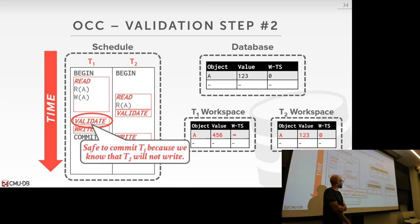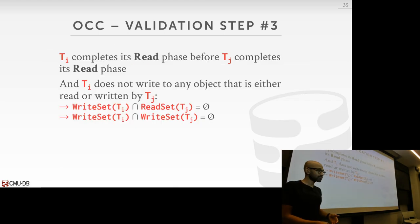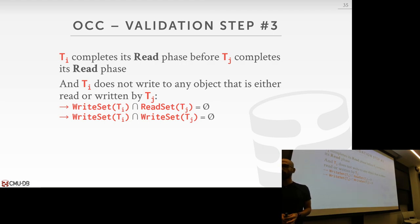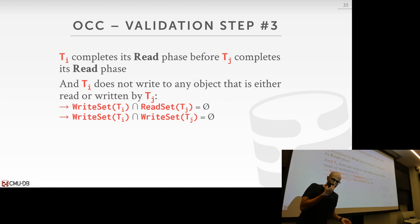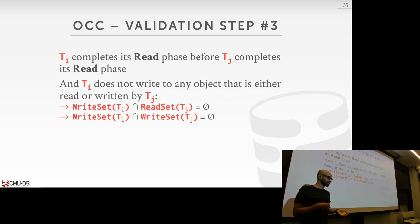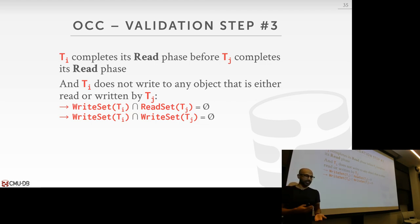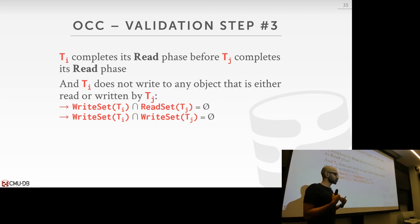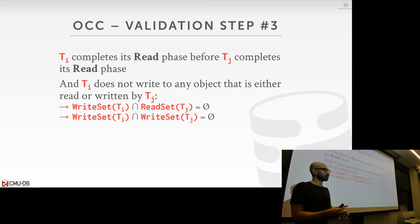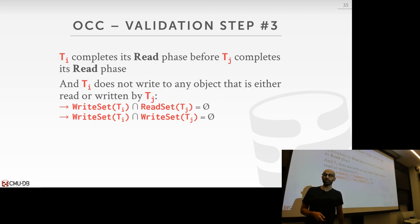Scenario 3: Ti completes its read phase before Tj begins its read phase. You must ensure that Ti's write set doesn't intersect with both the read set and write set of transactions whose read phases overlap. This is another scenario for how validation proceeds.